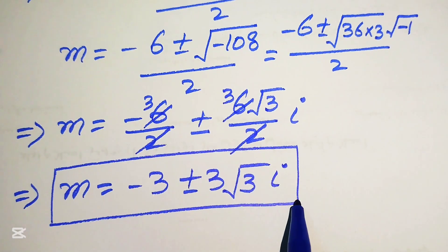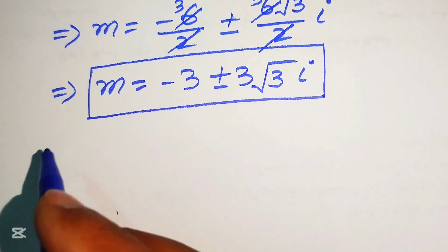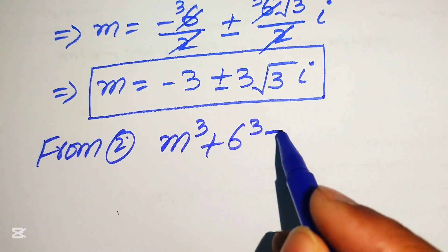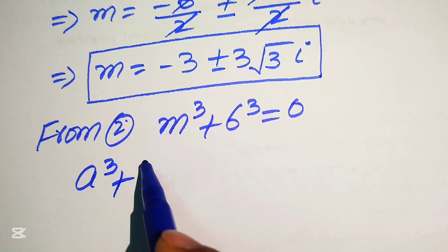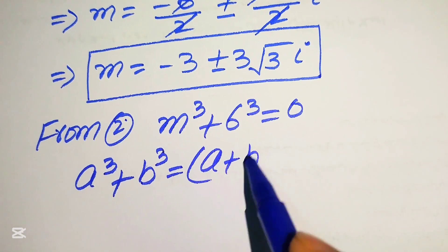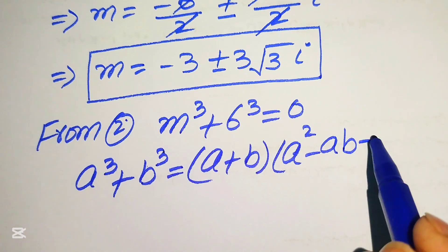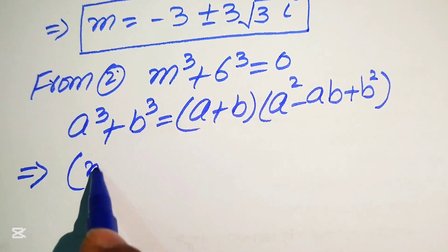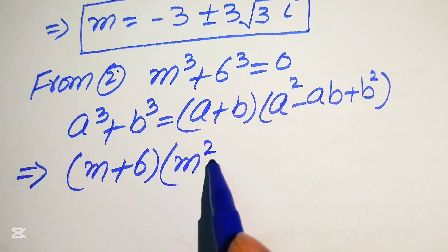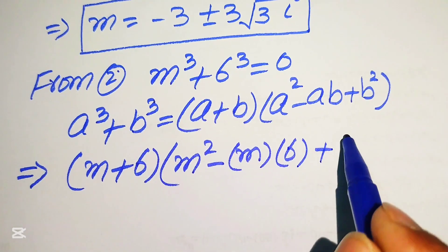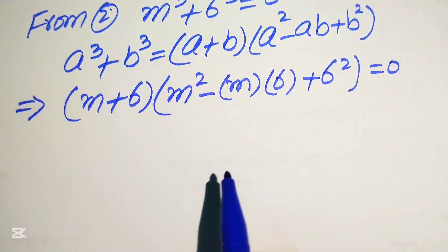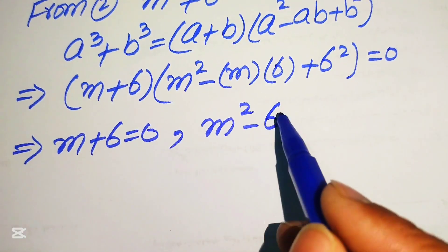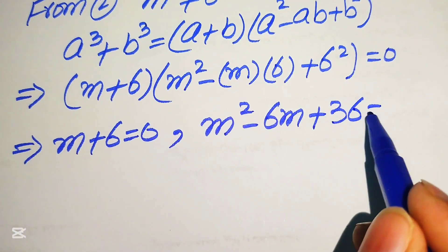These are the complex values from Case 1. Moving to Case 2: m cubed plus 6 cubed equals to 0. Applying the sum of cubes formula — a cubed plus b cubed equals a plus b times a squared minus ab plus b squared — we get m plus 6 times m squared minus 6m plus 36 equals to 0. This splits into m plus 6 equals 0 and m squared minus 6m plus 36 equals 0.